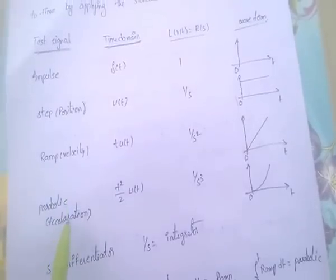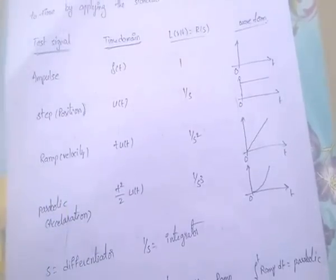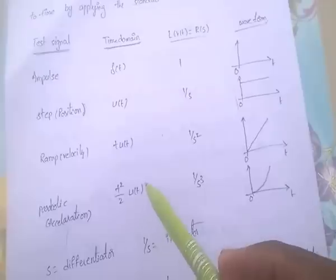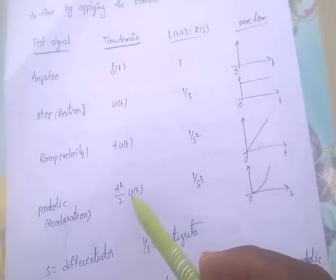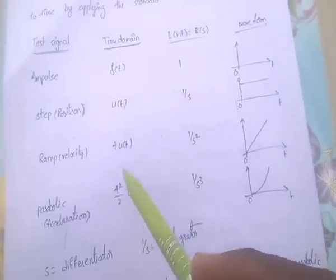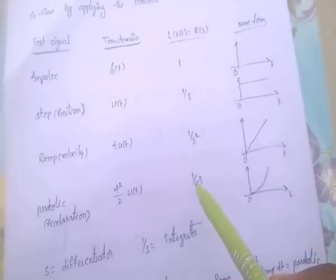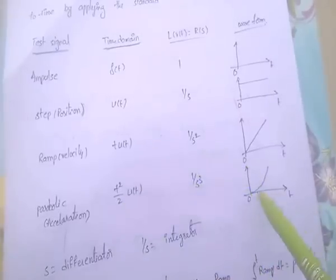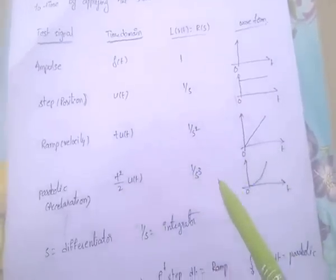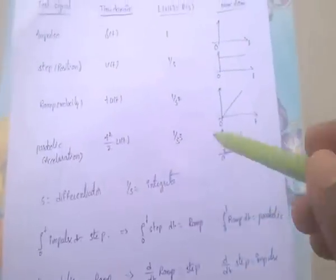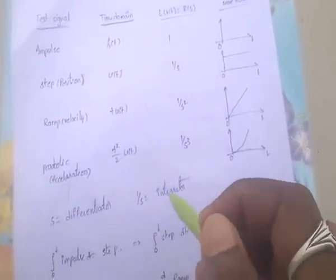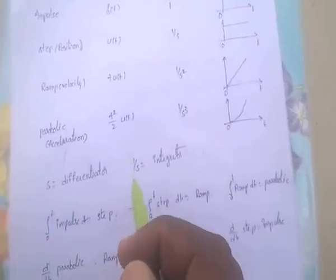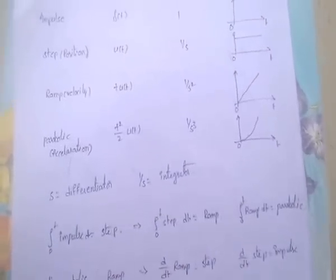This is the ramp or velocity signal. Next, the parabolic or acceleration signal, which is t²/2 · u(t), and the Laplace transform of t²/2 equals 1/s³. This is the parabolic signal. Note: s is treated as a differentiator and 1/s is treated as an integrator.